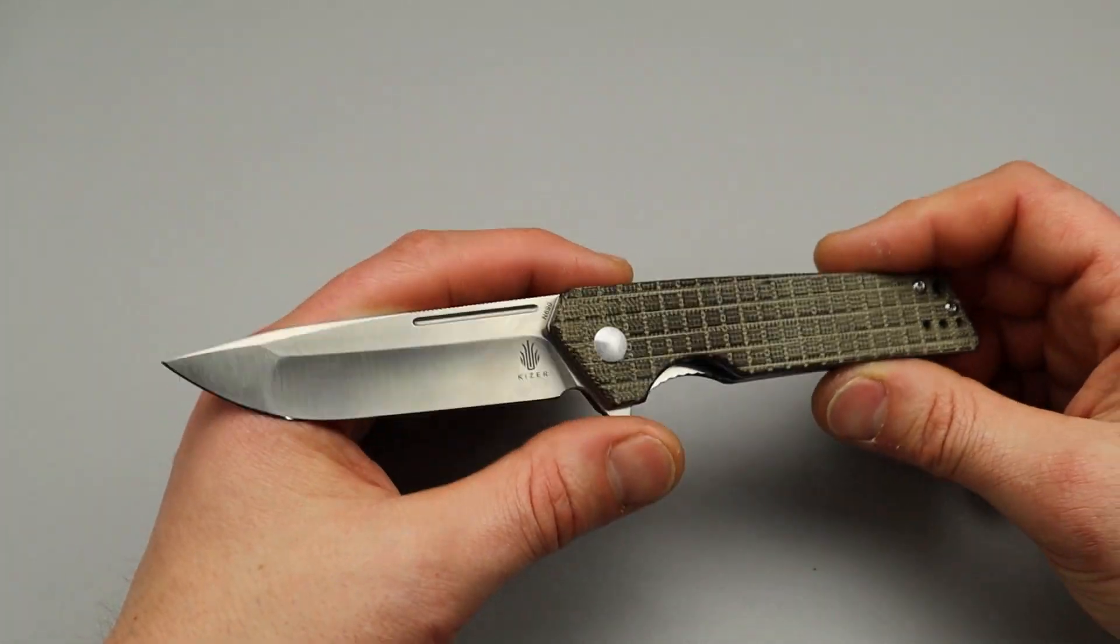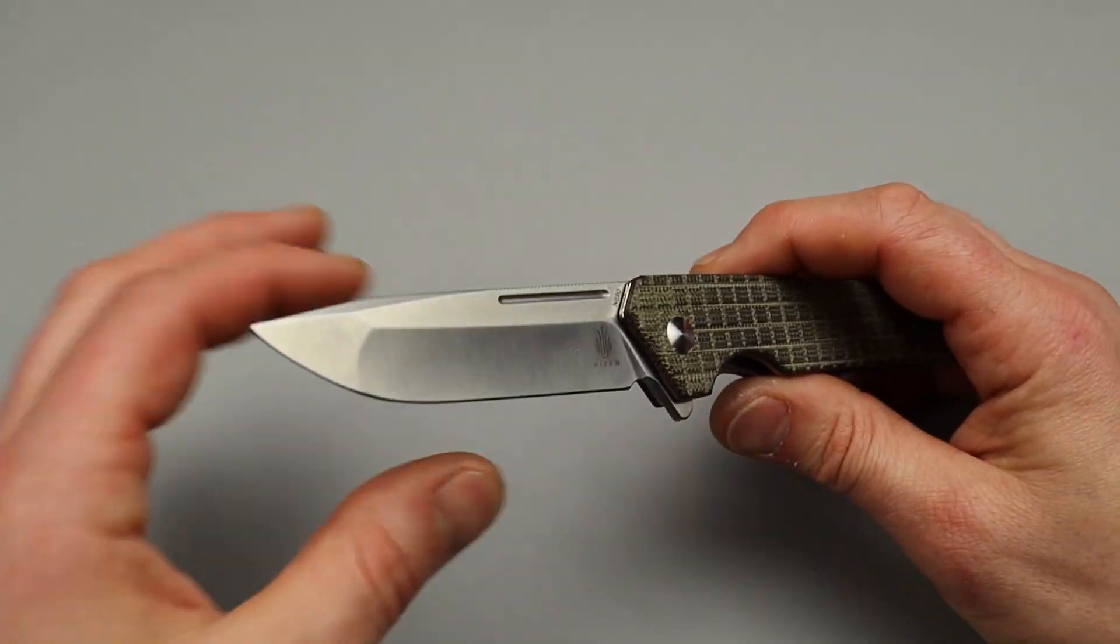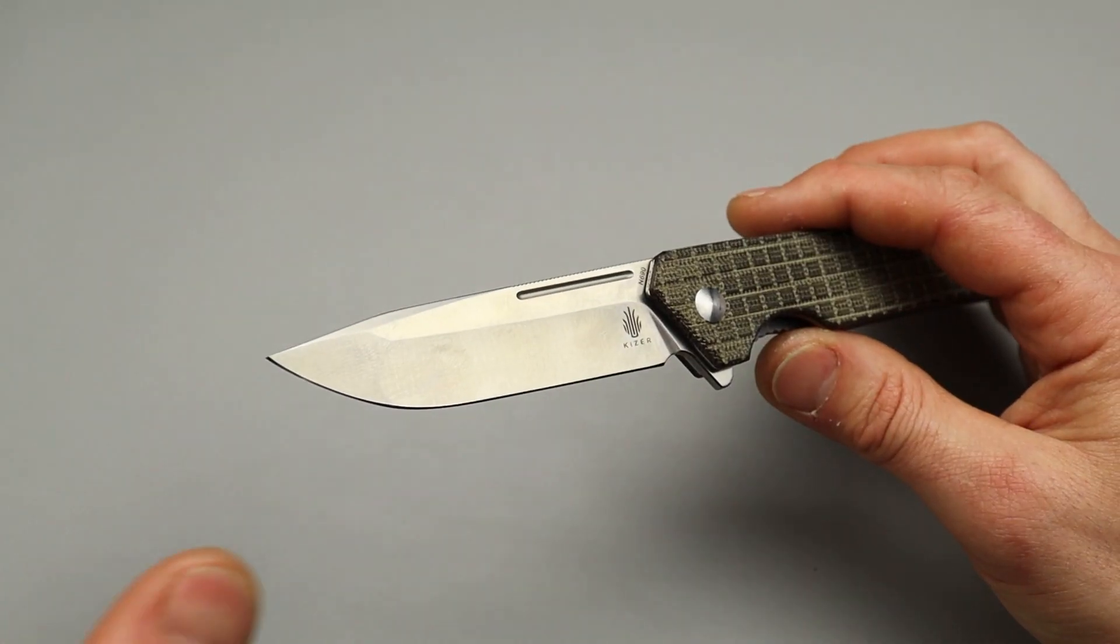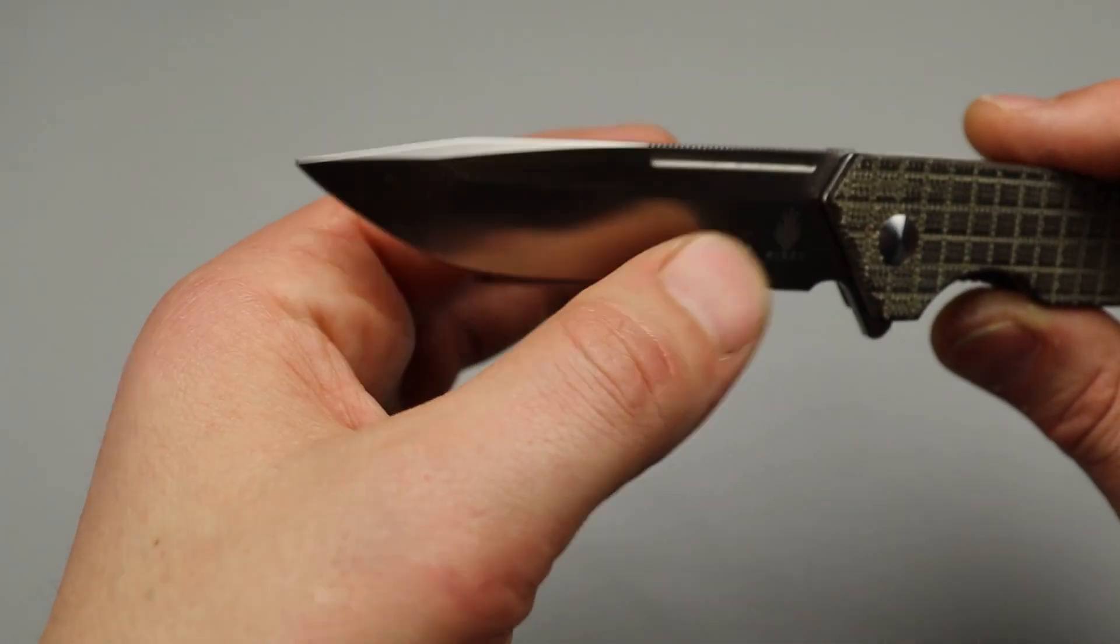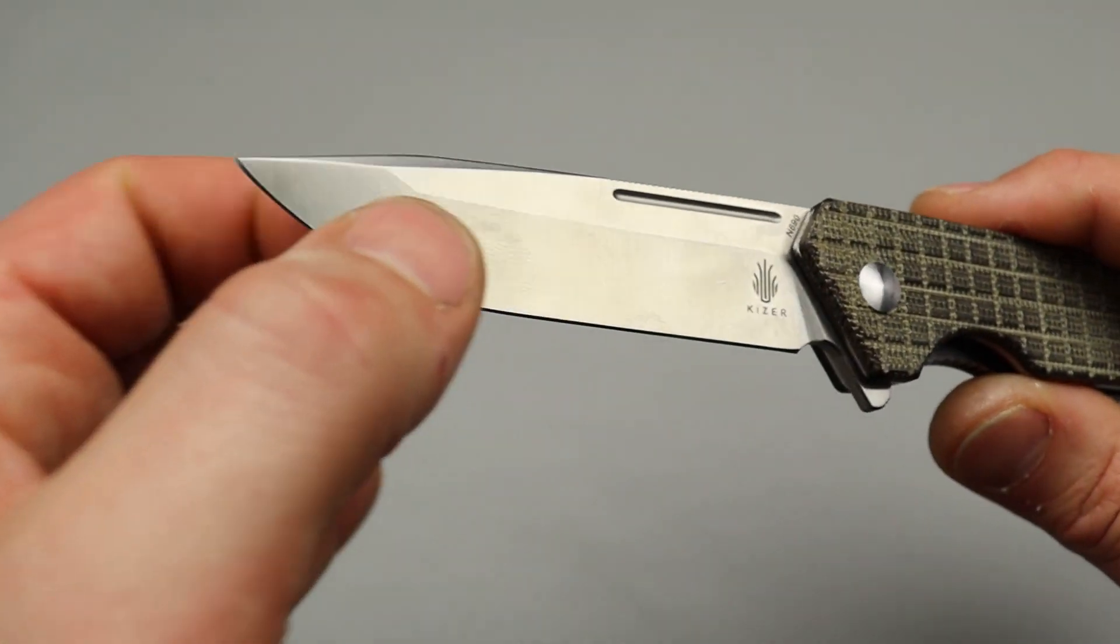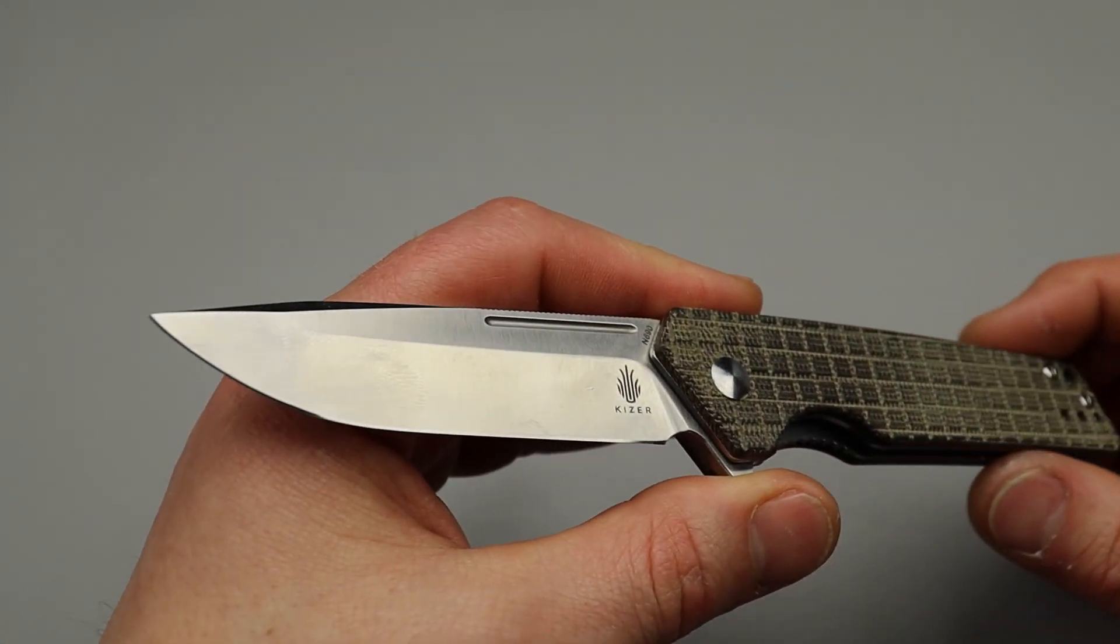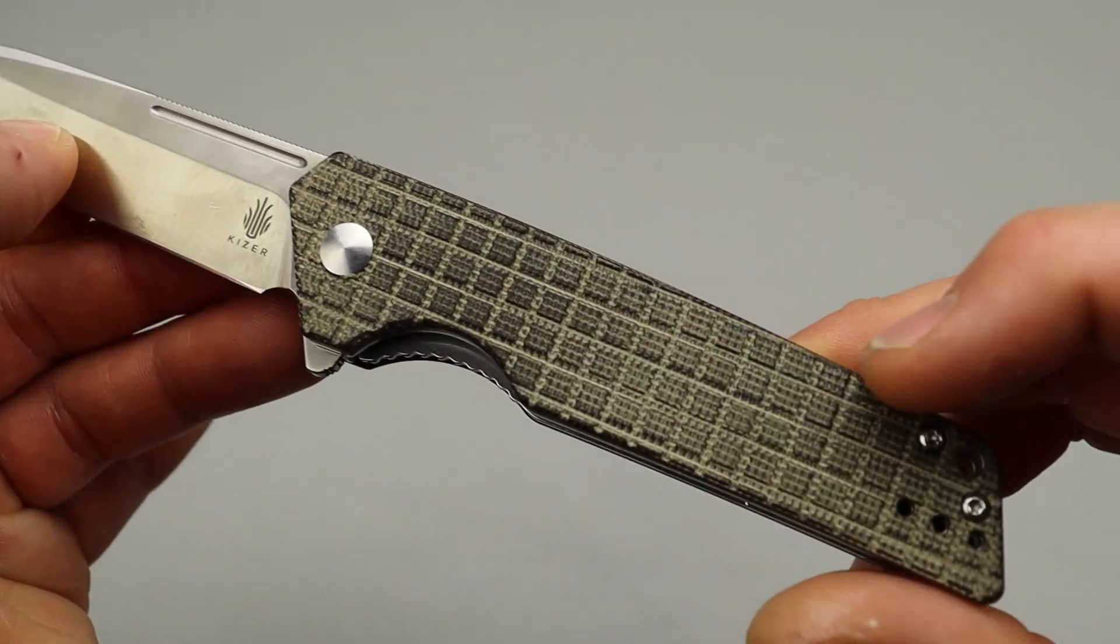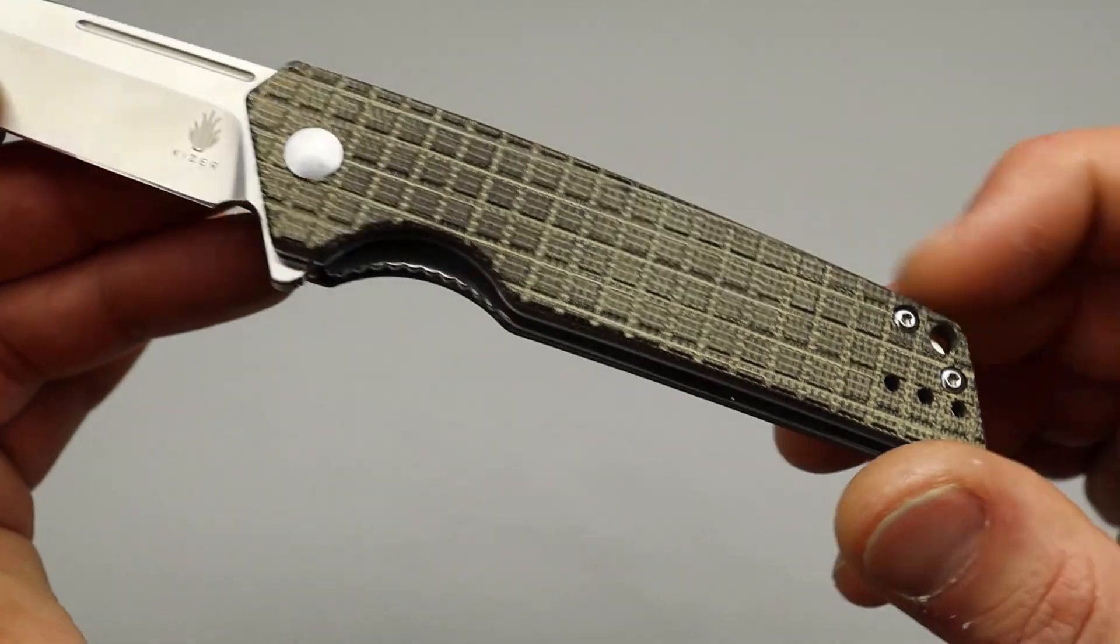Next, more of a budget option, the Kaiser Lan. Now, this also comes in more of an Americanized Tanto. This is more of a Japanese-style Tanto. Or, you can consider this a drop point if you want. It has a dual grind. We have a hollow grind here and a flat grind up here. Kind of like the React K2.